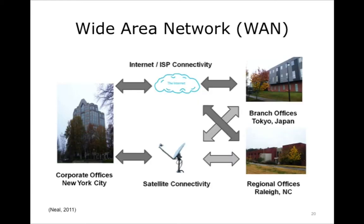A Wide Area Network, or WAN, is usually used for connecting computers and other network resources spanning a wide geographical area. WANs can be used to connect cities, states, or even countries, often using a variety of methods to ensure redundancy or security. For instance, corporate offices may be connected to both regional offices and international branch offices through a wide area network.